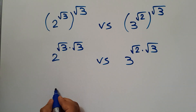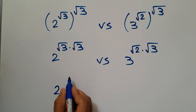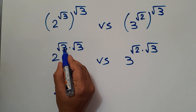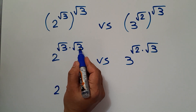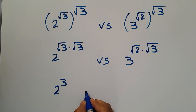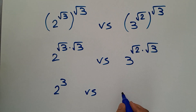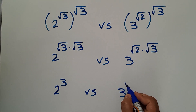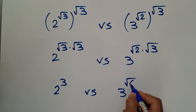2 to the power of square root of 3 times square root of 3 simplifies to 2 to the power of 3, and the right side becomes 3 to the power of square root of 6.